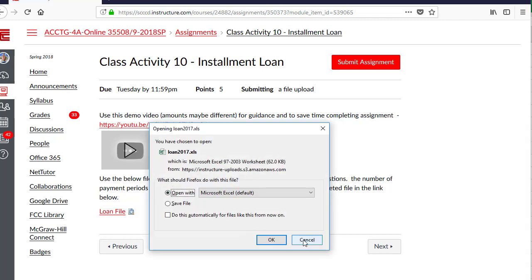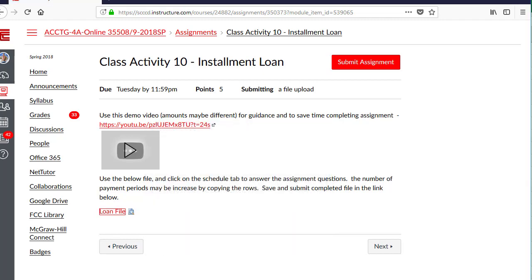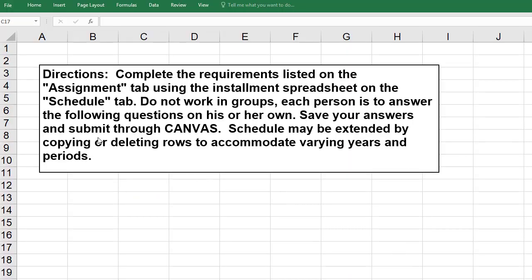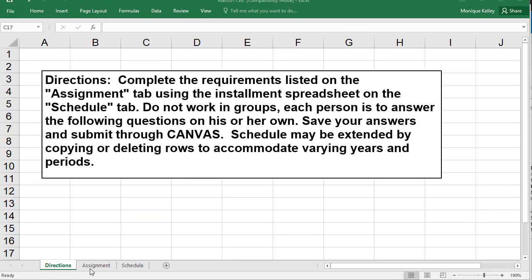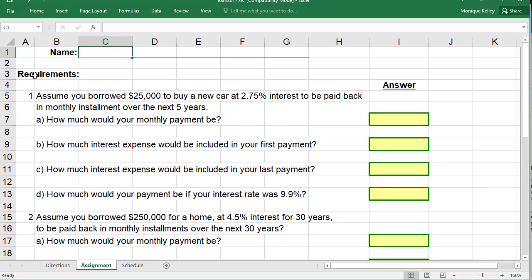Once you do that, you will download the Excel file. Once you open up the Excel file, there will actually be three tabs. The first one will be the directions—make sure you read these directions. The three tabs down here you have directions, assignment, schedule. Assignment will have the requirements.